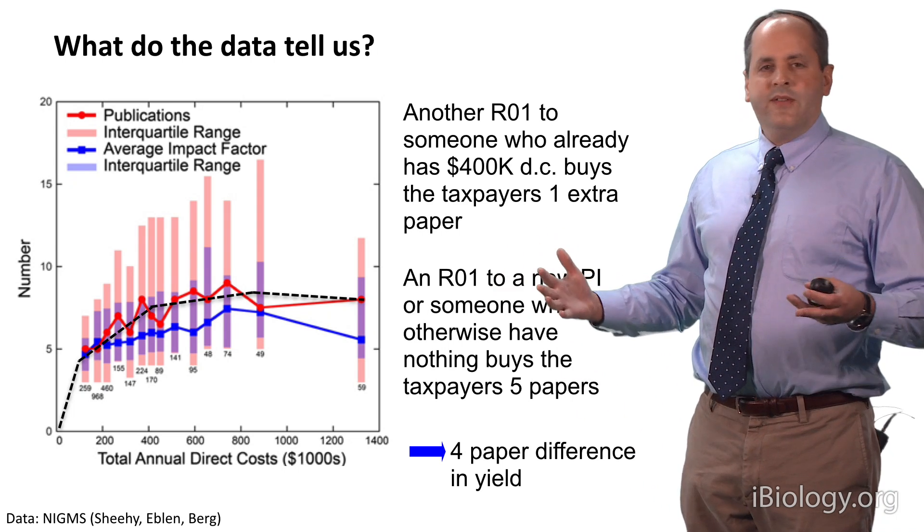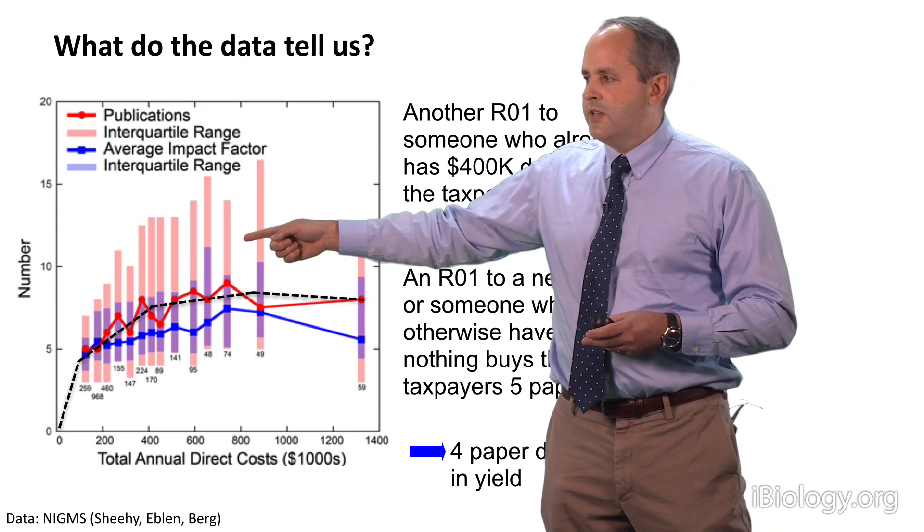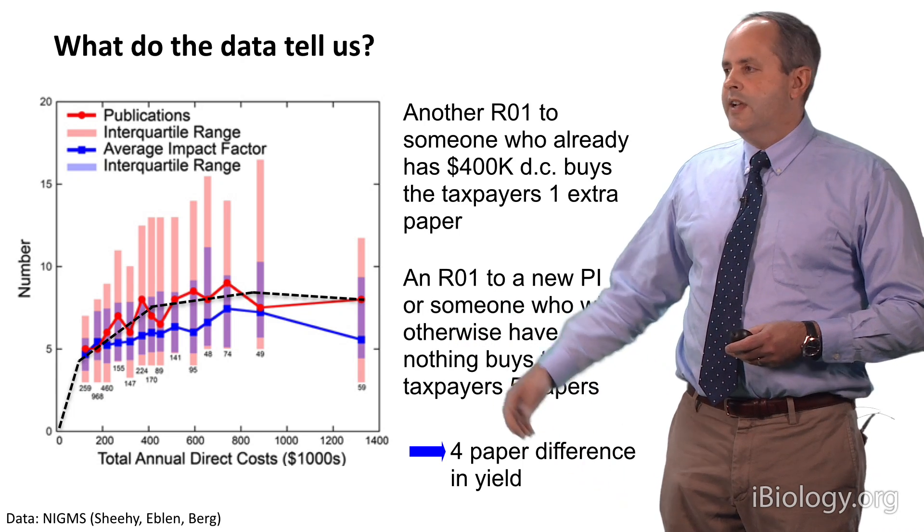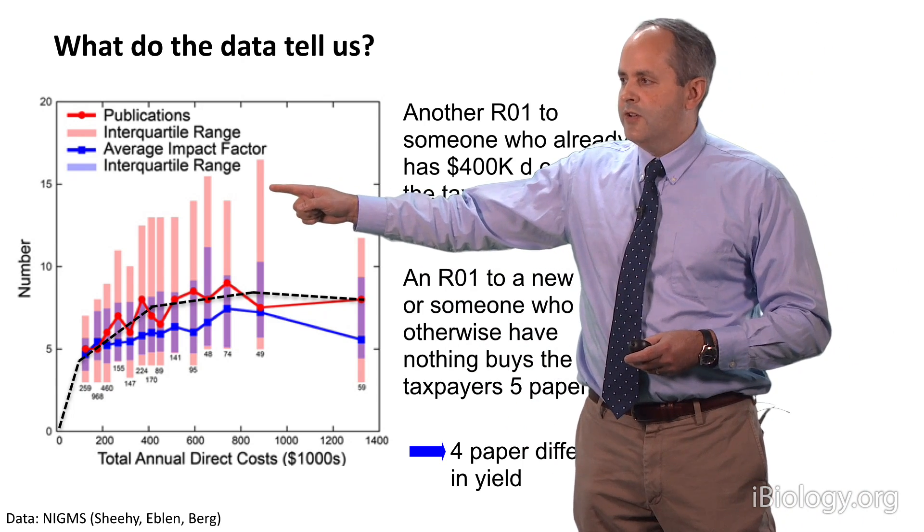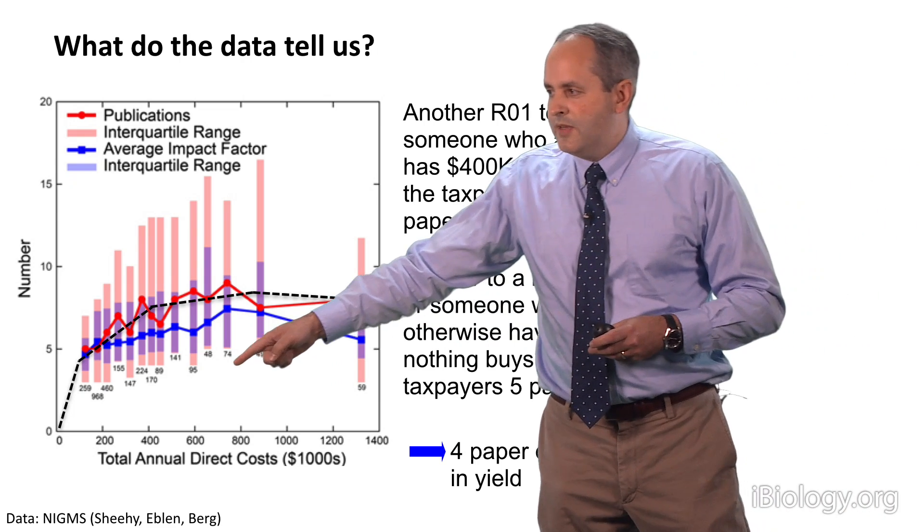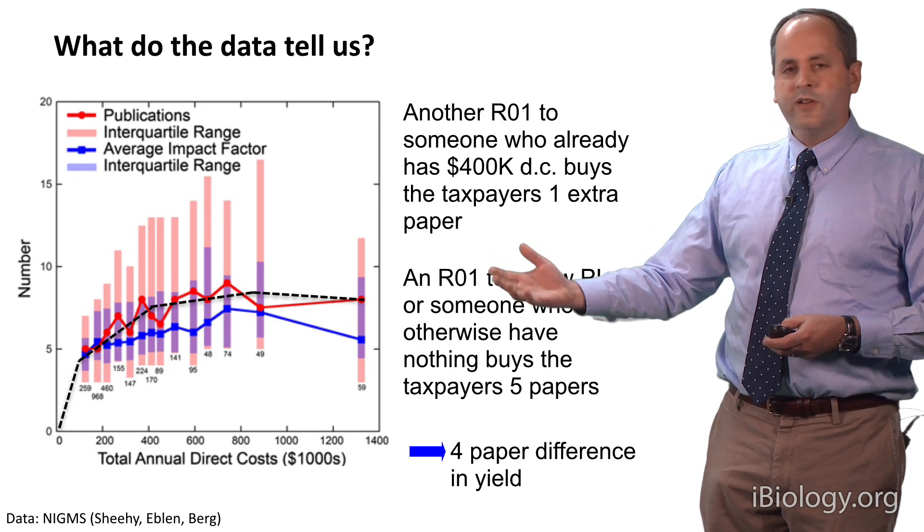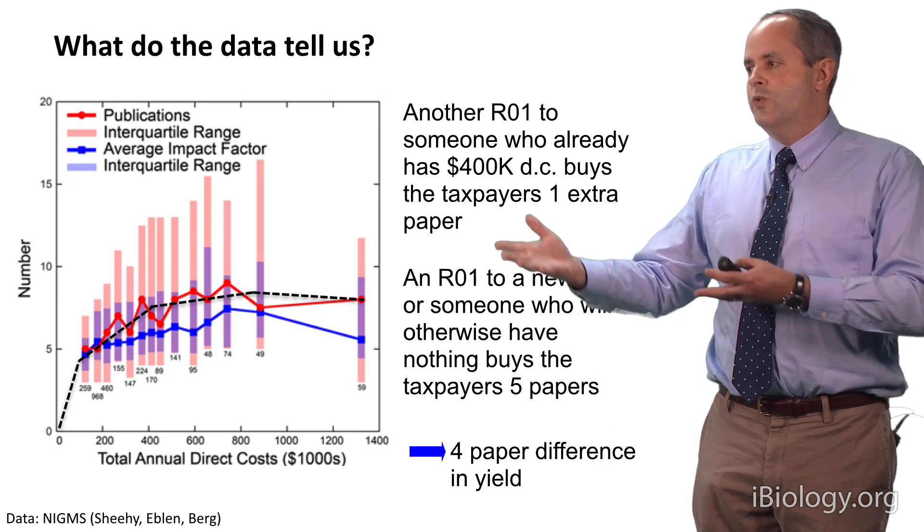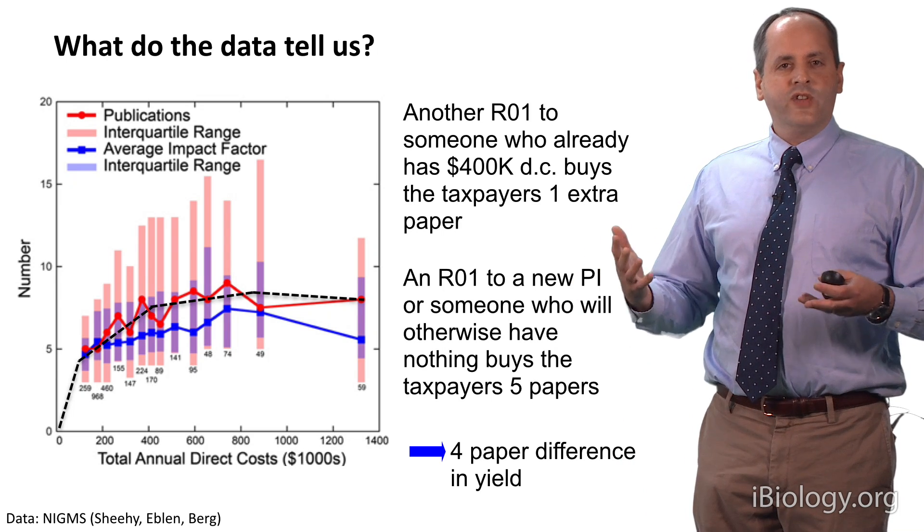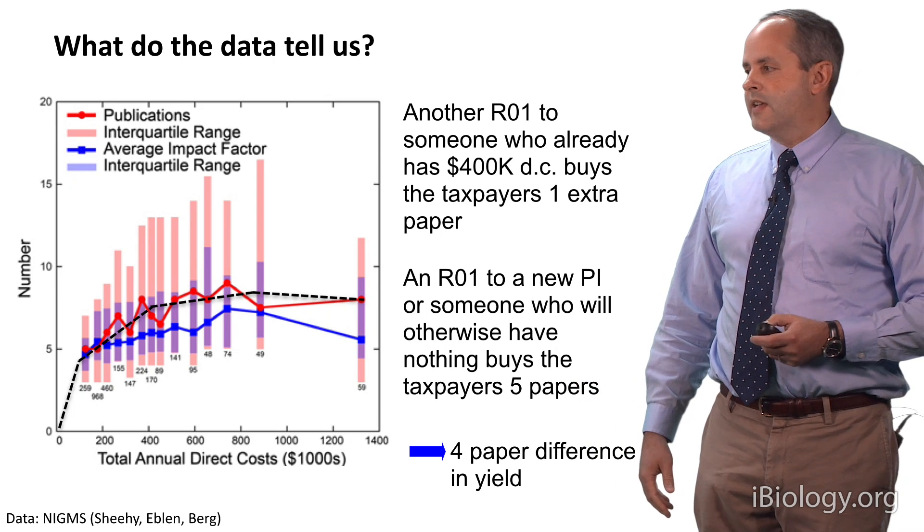Now, there's lots of caveats here. Some research is more expensive than others. If you look at these bars here, they show the interquartile ranges on the data, so you can see there's a lot of variation. And of course, some investigators really can use more money more efficiently. But by the same token, that means that there are also investigators who are, by definition, being funded, because we're only looking at funded investigators here, who do worse than the averages. And so as investors, we really need to think, in general, about the overall situation and what's best for the entire ecosystem.